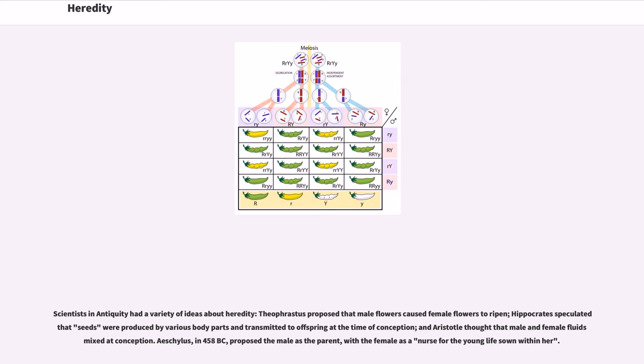Scientists in antiquity had a variety of ideas about heredity. Theophrastus proposed that male flowers caused female flowers to ripen. Hippocrates speculated that seeds were produced by various body parts and transmitted to offspring at the time of conception, and Aristotle thought that male and female fluids mixed at conception. Aeschylus, in 458 BC, proposed the male as the parent with the female as a nurse for the young life sown within her.